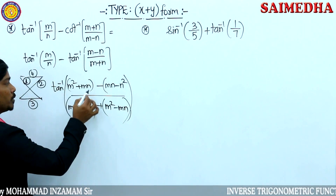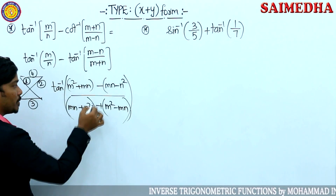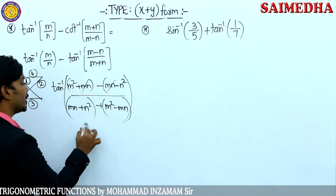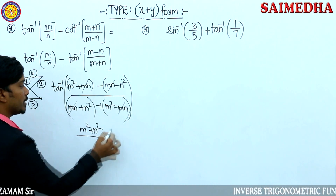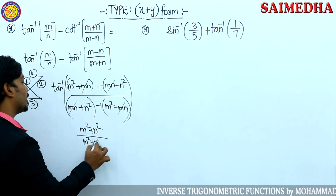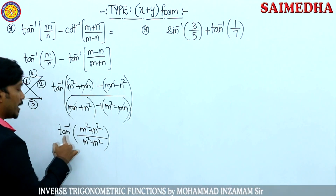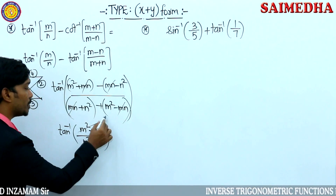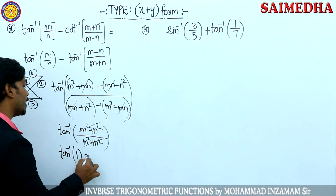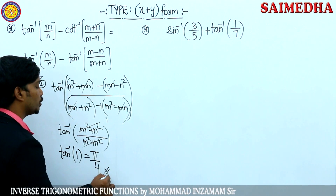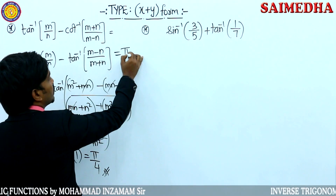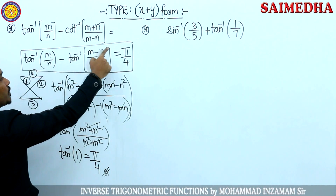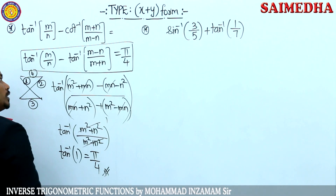This is a shortcut to solve it quickly. Minus mn plus mn and minus mn cancel out. Minus into minus gives plus n squared. So numerator becomes m squared plus n squared, denominator also m squared plus n squared — they cancel to give 1. Tan inverse of 1 equals π/4. This is the standard form: tan inverse of (m minus n)/(m plus n) equals π/4.